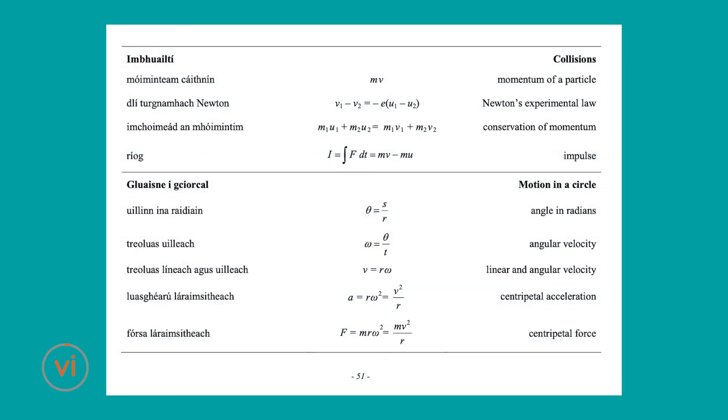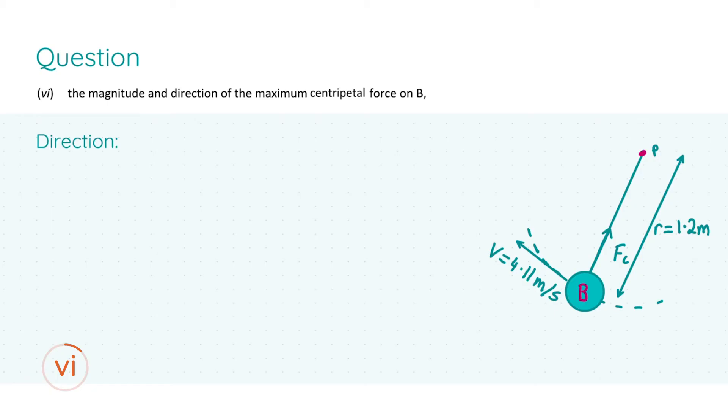Before moving on to the next part, we're going to turn to page 51 in our formula and tables book and look at the formula for centripetal force, F = mv²/r. Moving on to part 6, we are asked to find the magnitude and direction of the maximum centripetal force on B. First I'm going to look at the direction. As you can see to my right, the pendulum with mass B as the bob makes B travel in circular motion, hence B having a centripetal force. Therefore the tension of the rope is going to pull B inwards towards the point P, which will be the center of the circular motion. So the direction is towards P, and stating that will get you your first two marks.